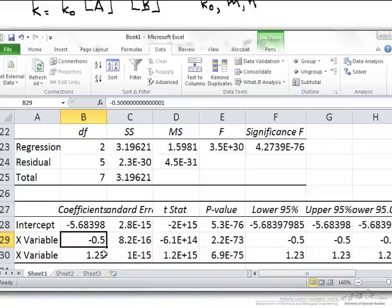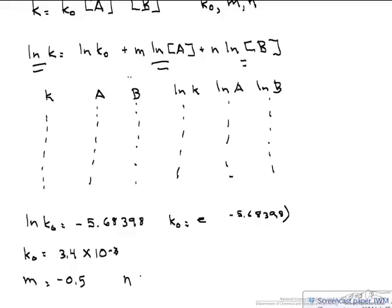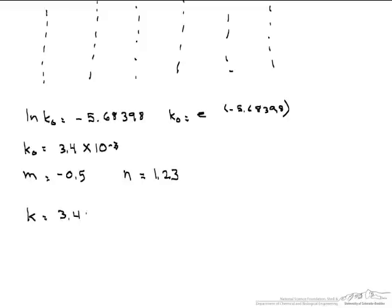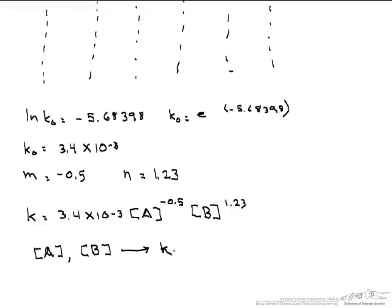So now we can put together our model, and what our model says is k equals k0, 3.4 times 10 to the minus 3, the concentration of A raised to the m power times the concentration of B raised to the 1.23 power. So that means that given any concentration of A and concentration of B, we use this model to find k, which is our rate.